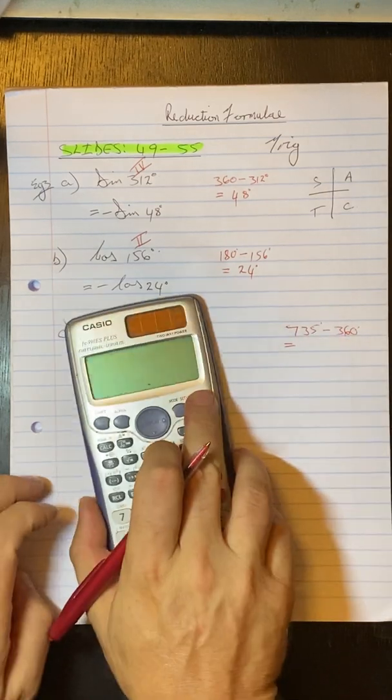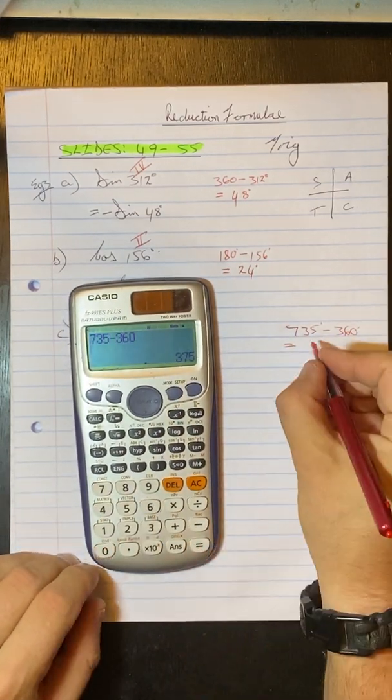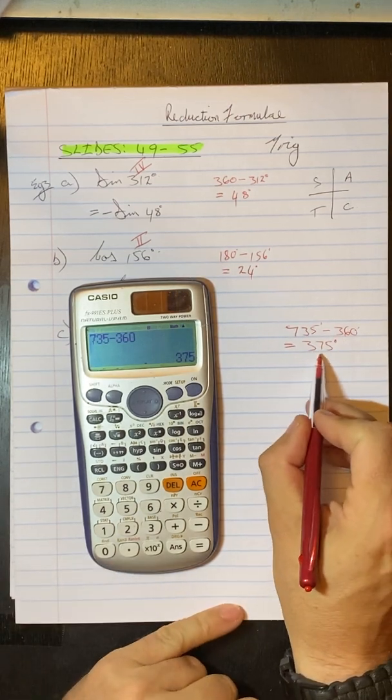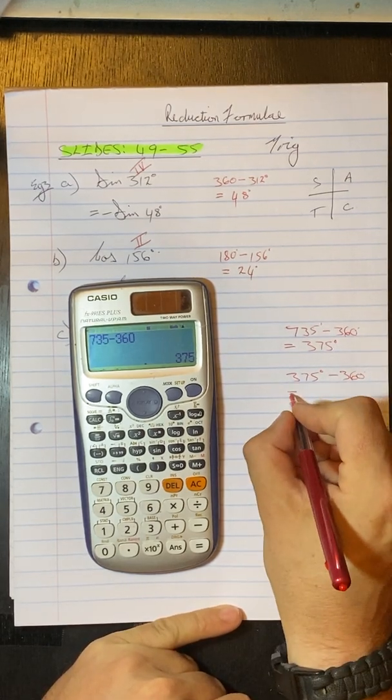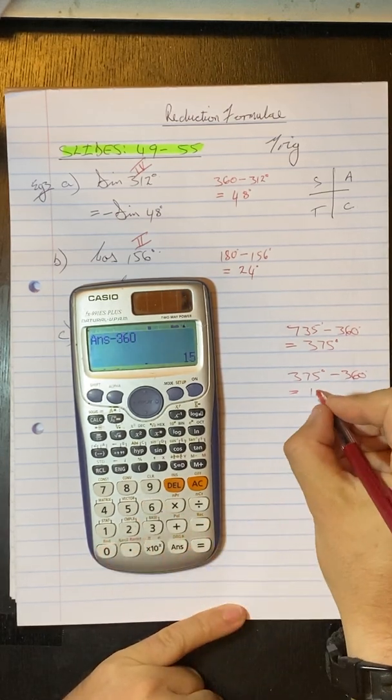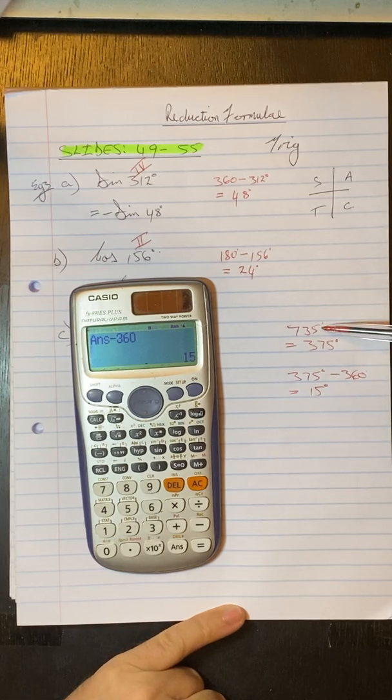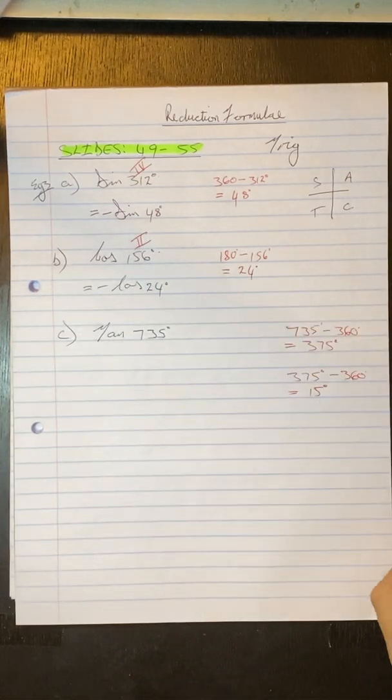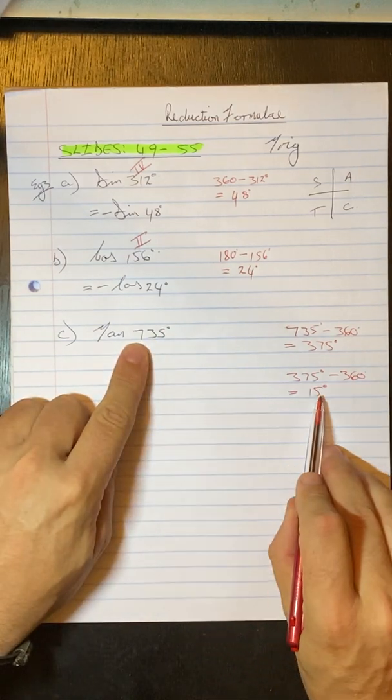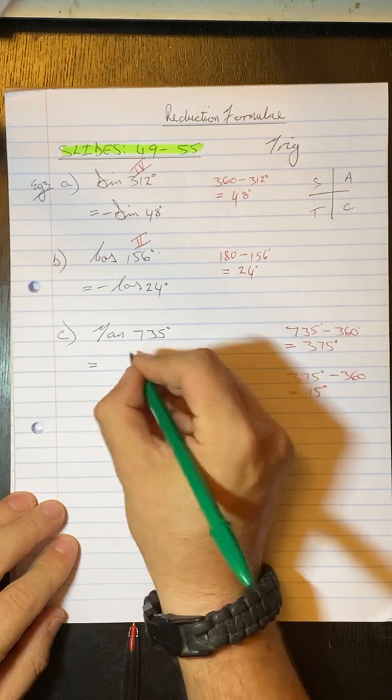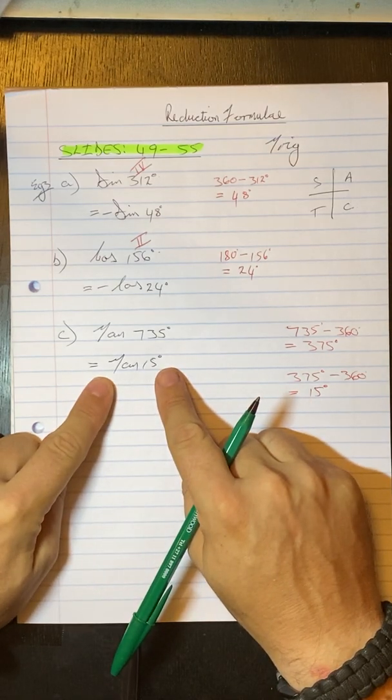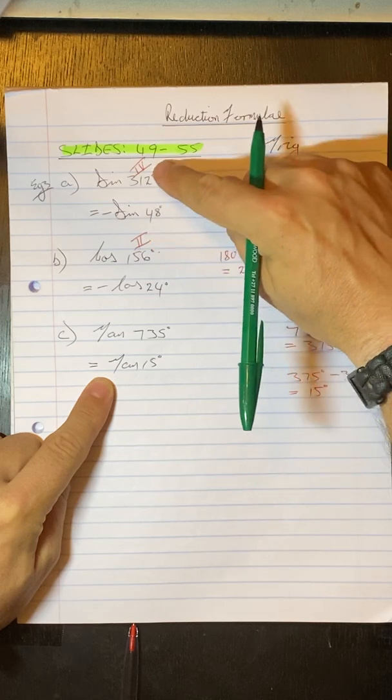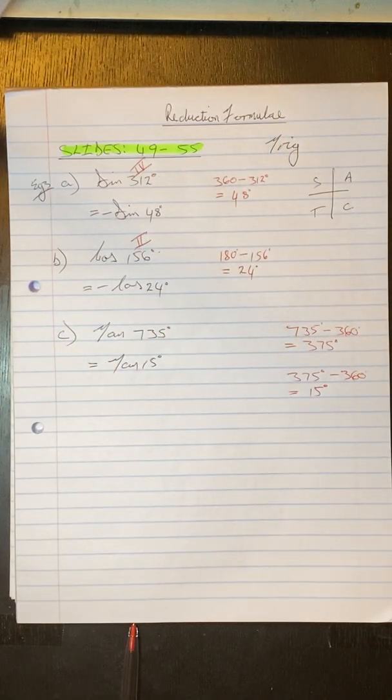Okay. So we get 735 minus 360 and we get 375. Again we still have an angle greater than 360. So I must still take away another 360 from it. So if I subtract another 360 from that I get 15. Okay. So essentially an angle of 735 degrees is exactly the same as an angle of 15 degrees. Okay. So we now know that this is equal to this. So we get tan 15 degrees. Okay. And you remember what the question was. The question was reduce these to an acute angle. So I don't have to do any of this work because 15 degrees is already acute. So we've completed that question.